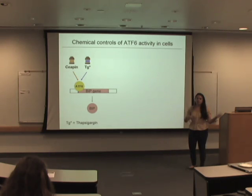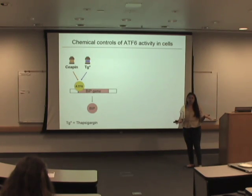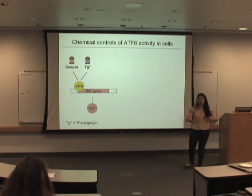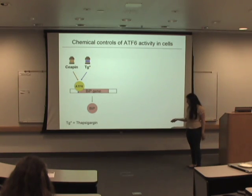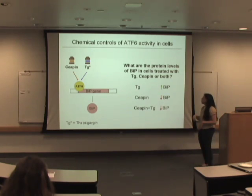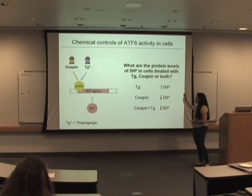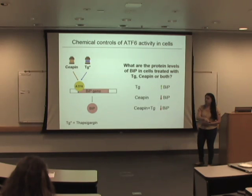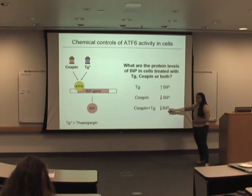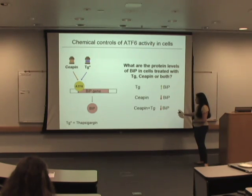Thapsigargin is basically the opposite of Ceapin. Ceapin prevents ATF6, while TG induces ER stress, which means more ATF6 activity and therefore more BIP. With Ceapin, even though you're going to have stress, you have that lock in place, so you're not supposed to see as much BIP. ATF6 signals for BIP as one of its targets — so BIP levels serve as our readout.